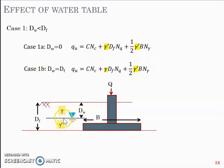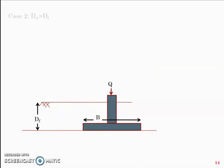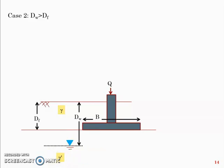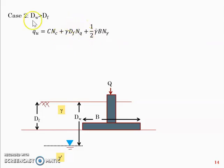This covers the effect of water table when it is above the foundation level. The next case is where the water table is below the foundation level — dw is greater than df. Soil above the water table has bulk unit weight gamma, and below it we use submerged unit weight. The general equation becomes: qu = c·Nc + gamma·df·Nq + half·gamma_bar·B·N_gamma. The second term remains bulk unit weight since the water table is well below the foundation level.